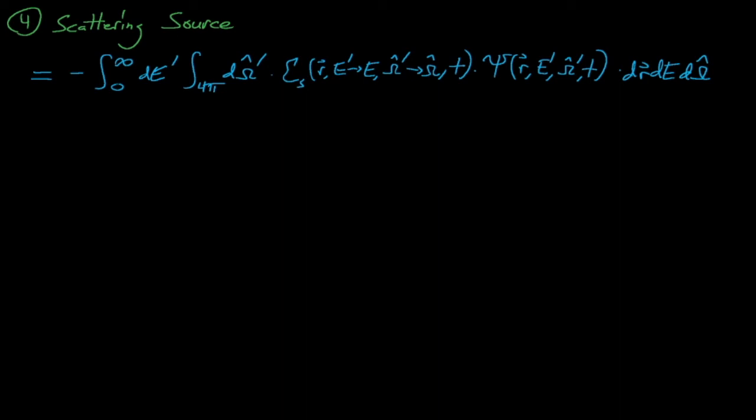It's worth noting that neutrons can scatter into exactly the same energy and exactly the same direction that they had before entering a collision. When this happens, the scattering source and the absorption term will cancel out.